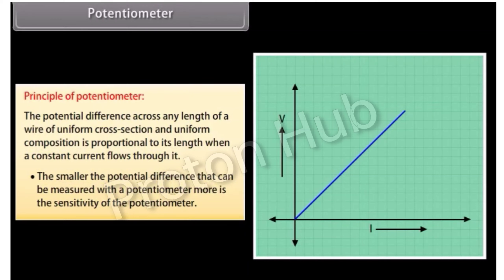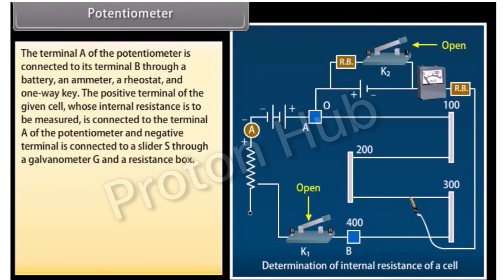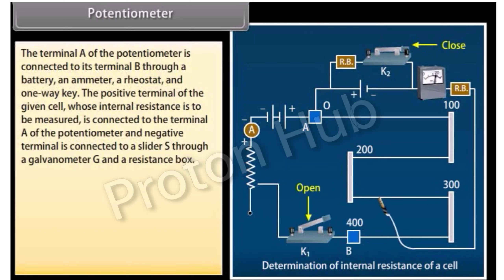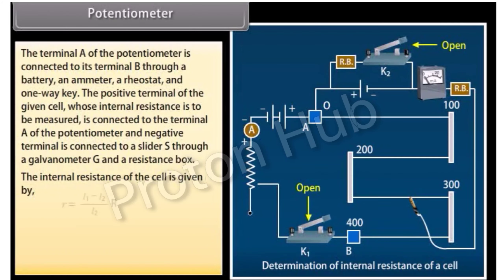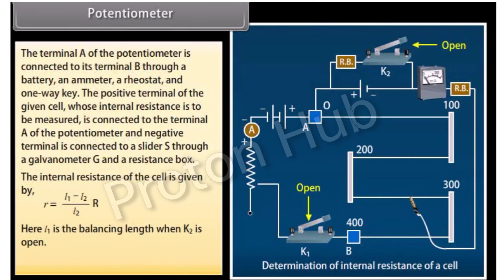The smaller the potential difference measurable with a potentiometer, the greater the sensitivity. Terminal A is connected to terminal B through a battery, ammeter, rheostat, and one-way key. The positive terminal of the given cell is connected to terminal A and the negative terminal to a slider S through a galvanometer G and resistance box. The internal resistance of the cell is given by r = [(L1 − L2)/L2] × R, where L1 is the balancing length when K2 is open and L2 is the balancing length when K1 is open.